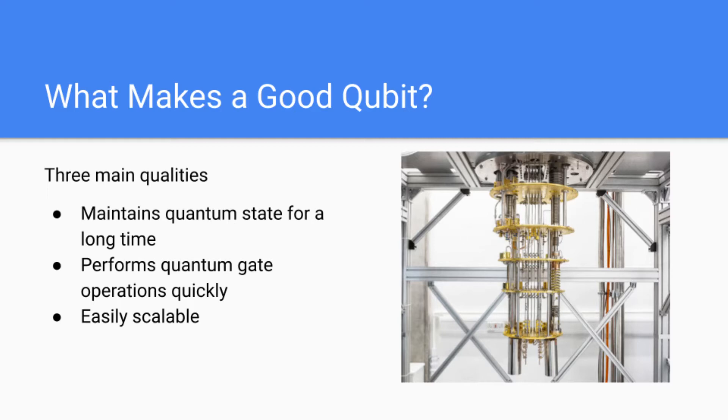Secondly, I alluded to this point in the first point, but we want qubits to be able to perform quantum gate operations extremely quickly. Just like the first quality, performing quantum gate operations quickly will allow quantum computers to perform more operations and therefore execute more complex quantum circuits, algorithms, and solve more complex problems.